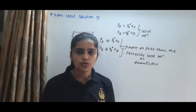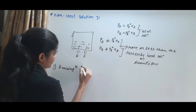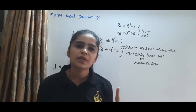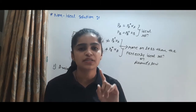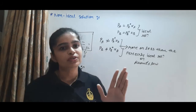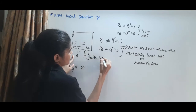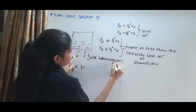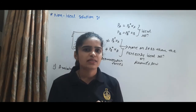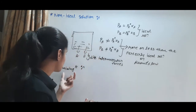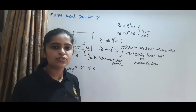The first characteristic of the non-ideal solution is that the heat change on mixing, ΔH_mix, is not equal to zero. In the ideal solution, there is no heat change on mixing because the attractive forces are identical. But in the non-ideal solution, the attractive forces between A and B differ. Somewhere the attraction is more and somewhere it is less, so the heat change on mixing is not equal to zero.